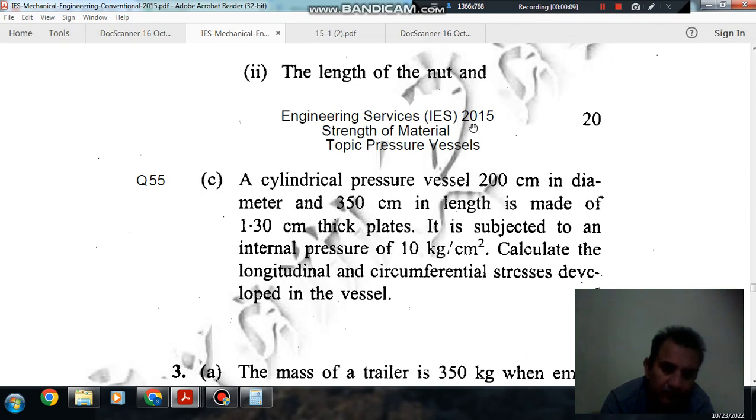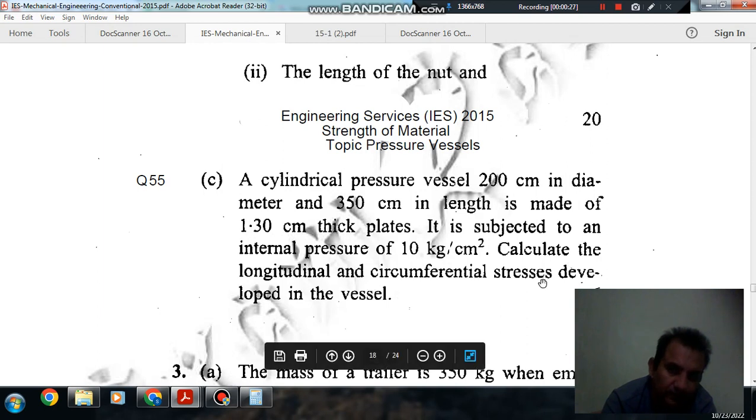Question 55 from Engineering Services 2015: A cylindrical pressure vessel 200 cm in diameter and 350 cm in length is made of 1.3 cm thick plates. It is subjected to an internal pressure of 10 kg per cm². Calculate the longitudinal and circumferential stresses developed in the vessel.